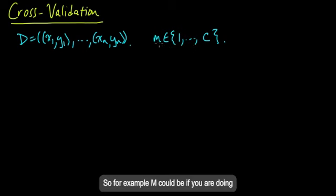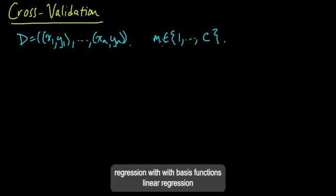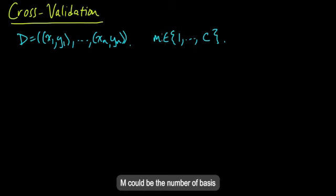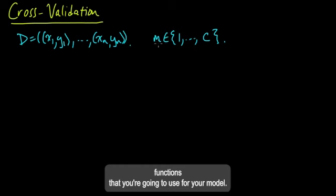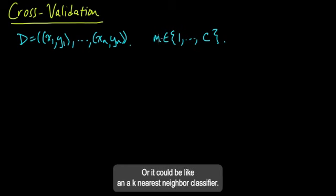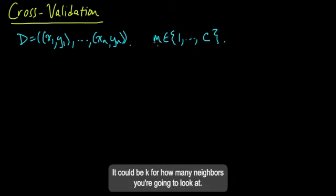So for example, m could be, if you were doing regression with basis functions, linear regression, m could be the number of basis functions that you're going to use for your model. Or in a k nearest neighbor classifier, it could be k for how many neighbors you're going to look at.